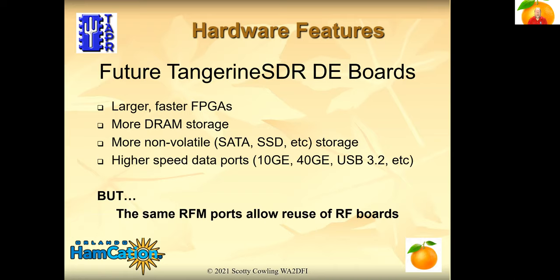Future data engine boards: we're talking about expandability since we're modular — larger and faster FPGAs, more RAM storage, maybe an SSD on board, and higher-speed data ports. The advantage of using gigabit ethernet is it scales to 10 gig, 40 gig, etc., very easily, while keeping the same RF ports so you can reuse the RF modules you have now.